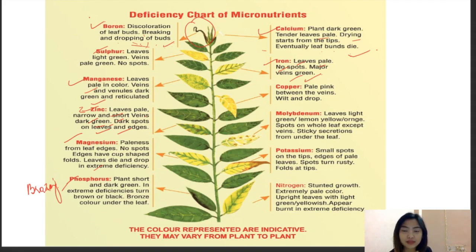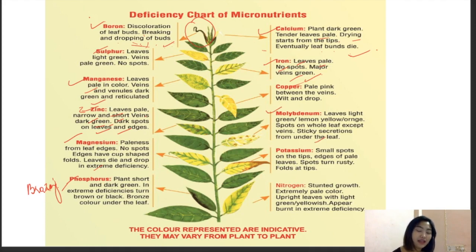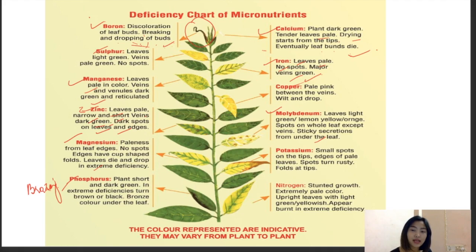Potassium deficiency: small spots on leaves, edges of pale leaves, spots turning rusty at the tip. Nitrogen deficiency: stunted growth, extreme pale color, upright leaves that are light green to yellowish, appearing burnt in extreme deficiencies. These are the different deficiency symptoms shown by various elements. This diagrammatic view makes it much easier and clearer to identify them.